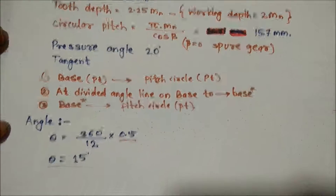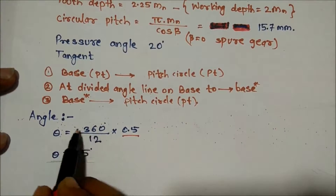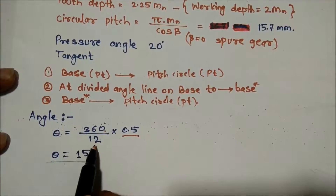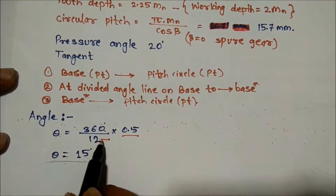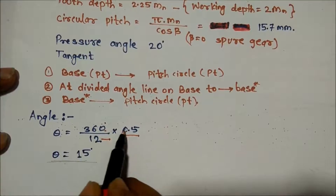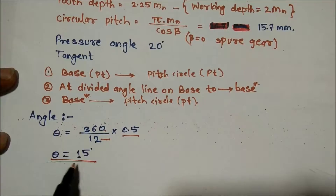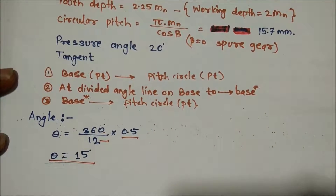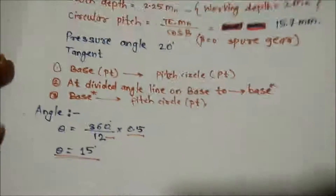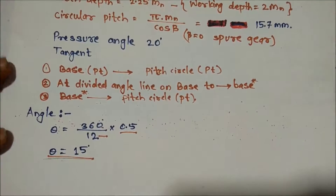The full circle is 360 degrees and we need 12 teeth, so we divide 360 by 12 and multiply by 0.5, giving a spacing angle of 15 degrees. Now let's draw the circles and design the full gear.